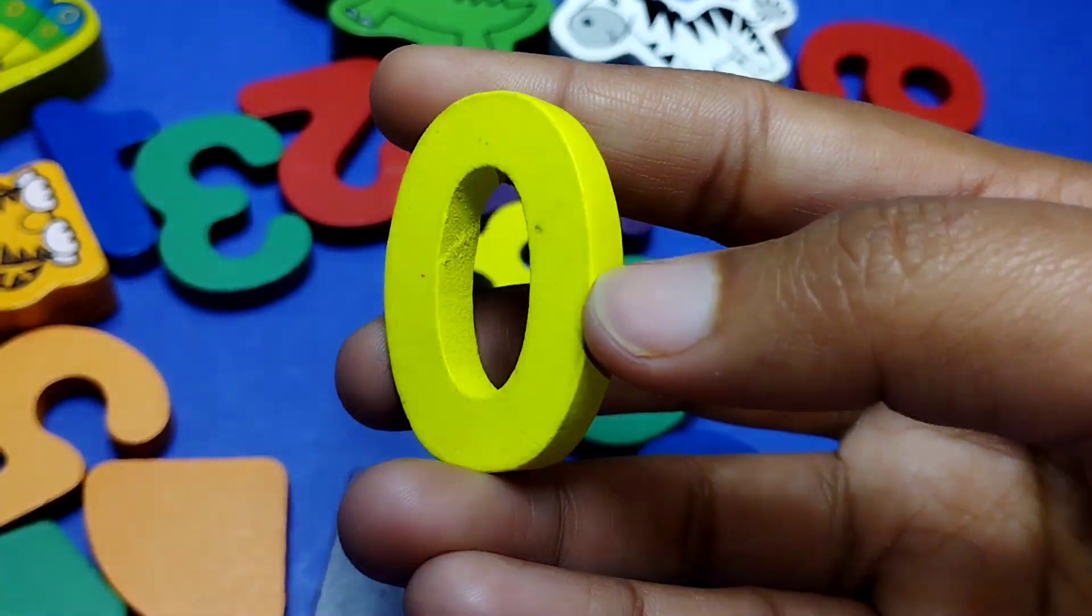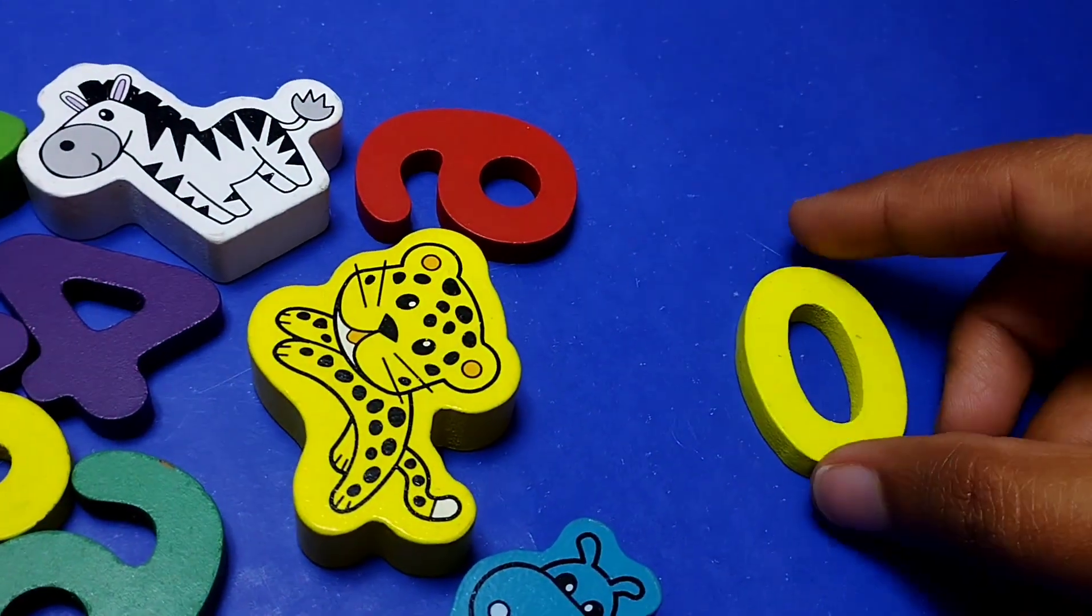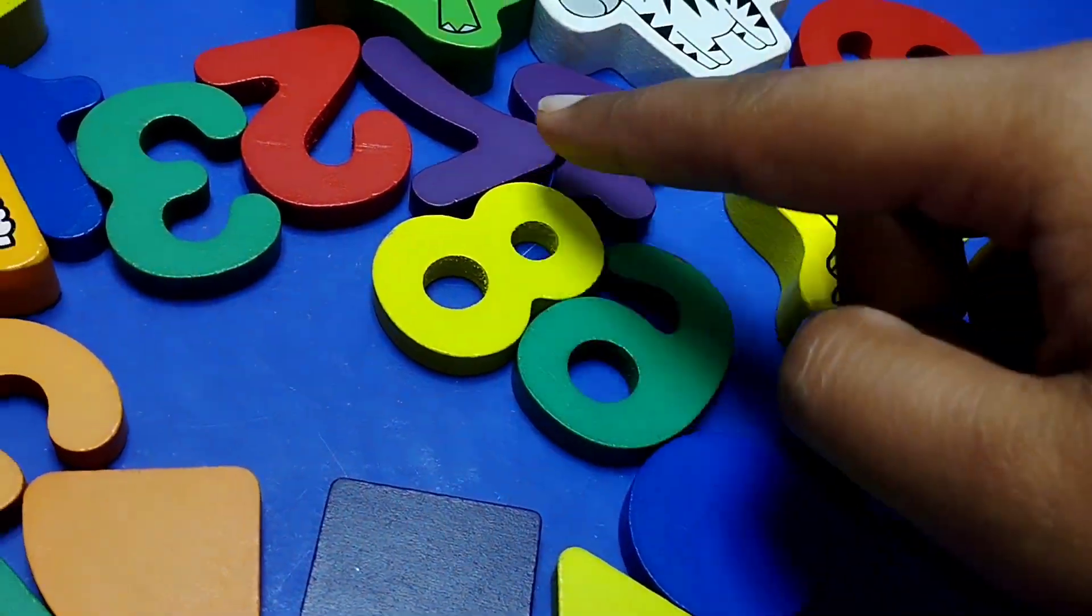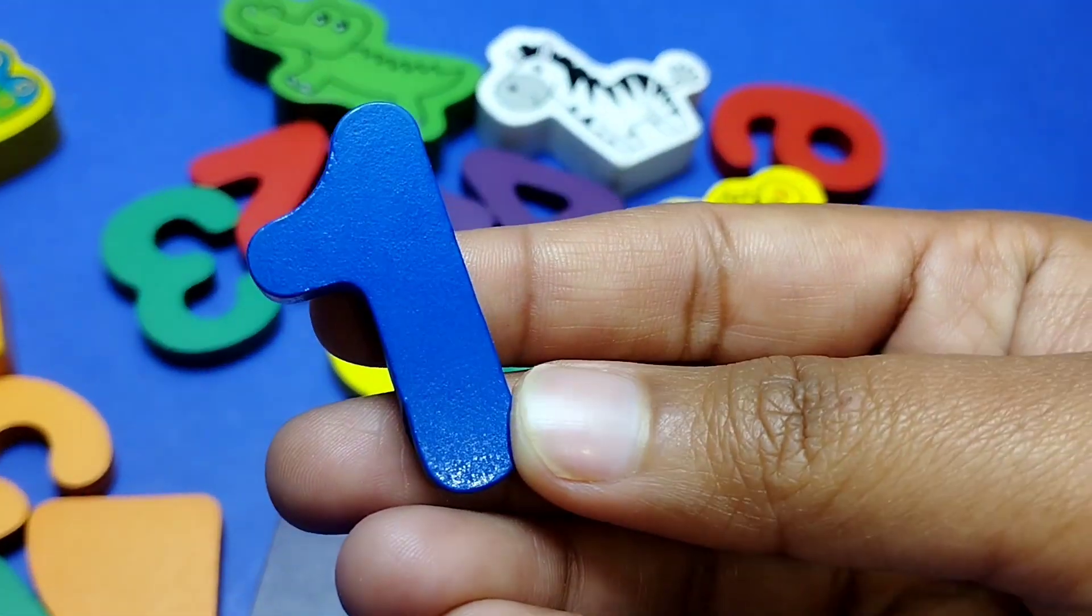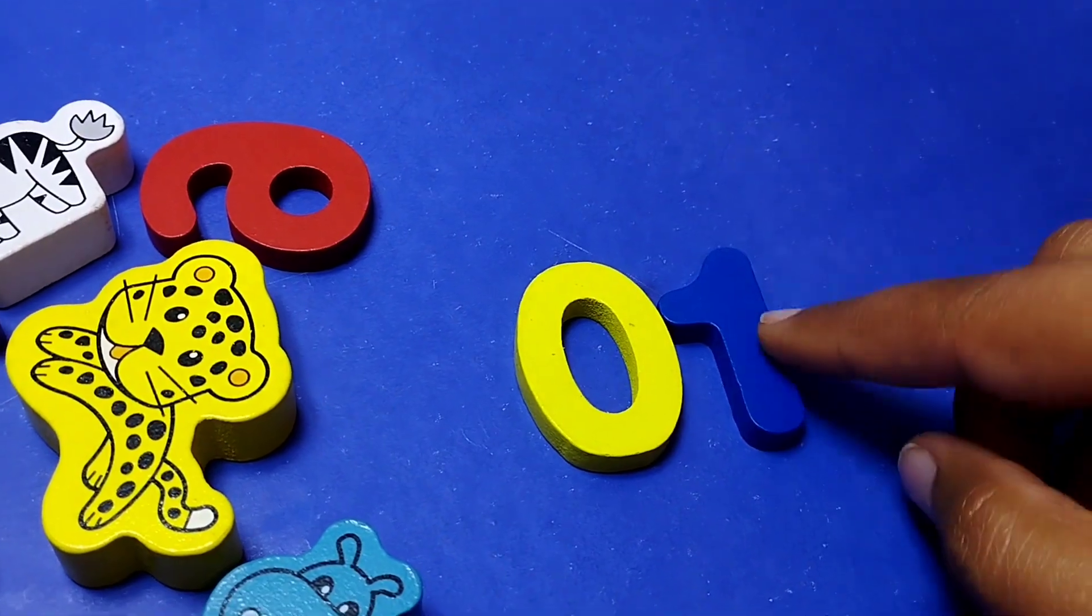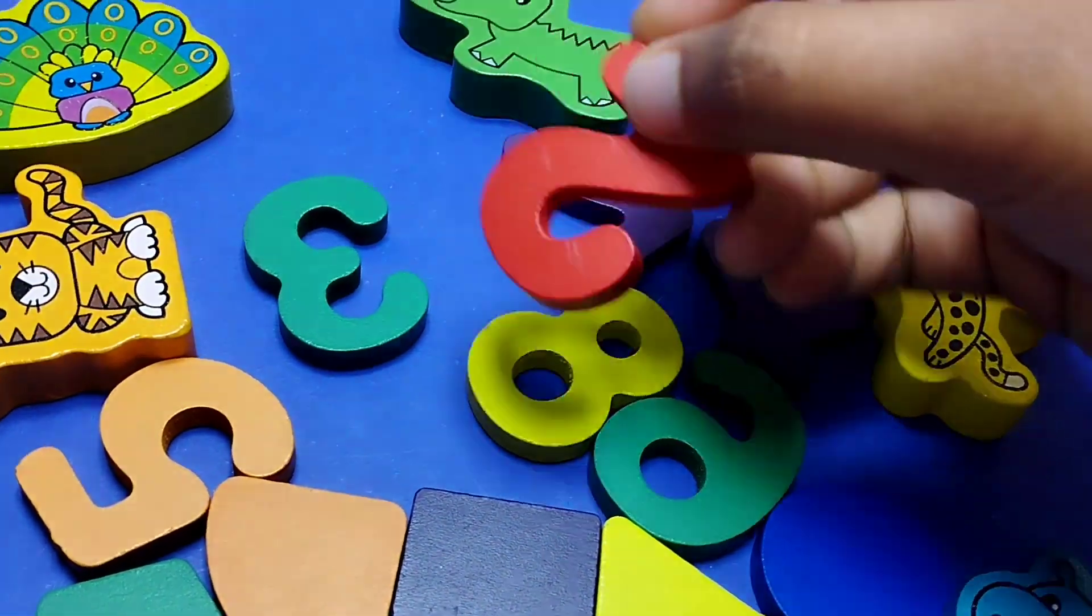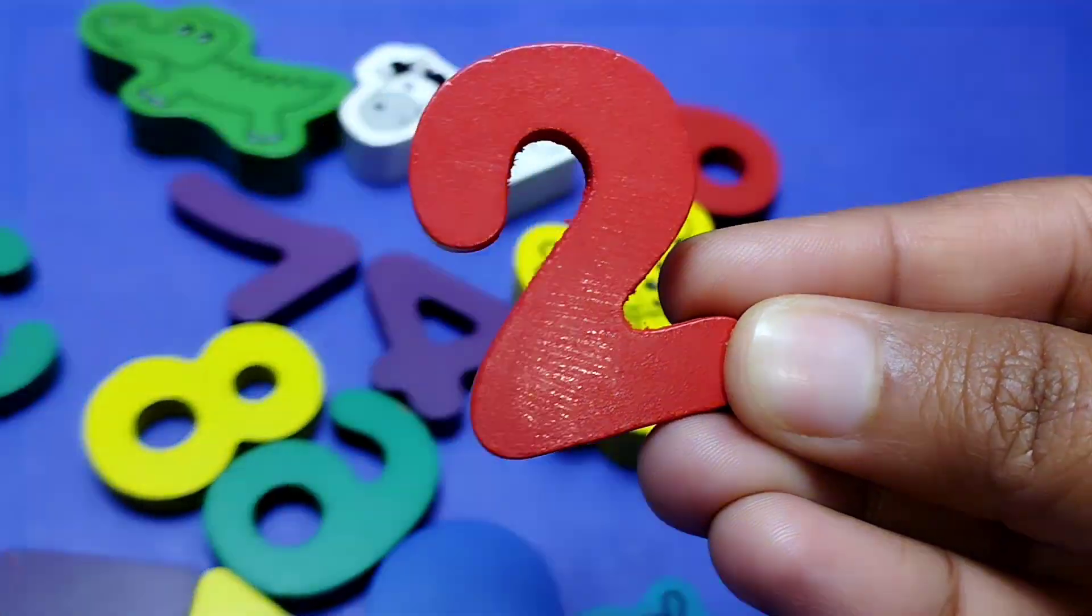The first number is zero. The next number is number one. This is number one. The next number is number two. This is number two.